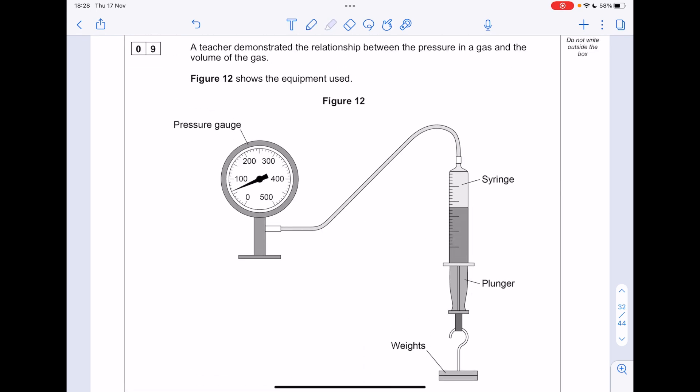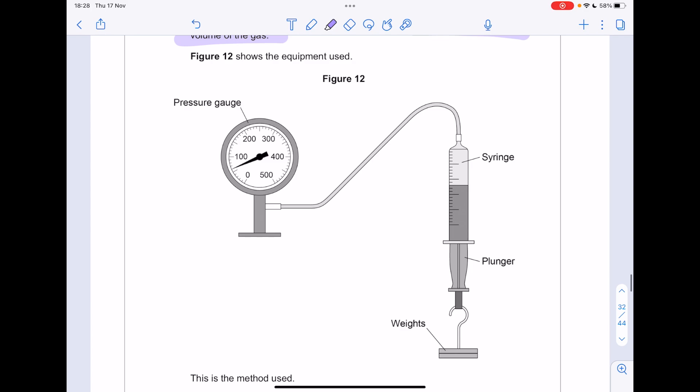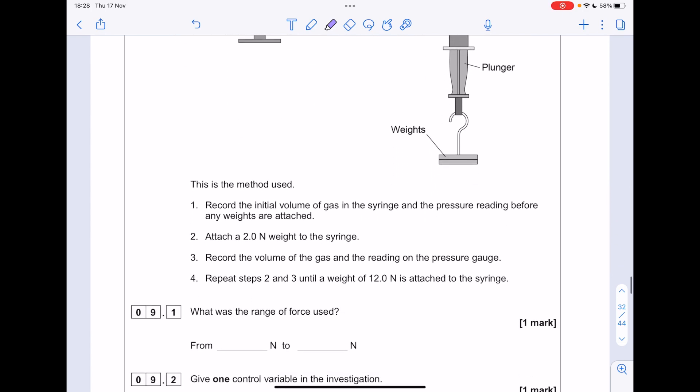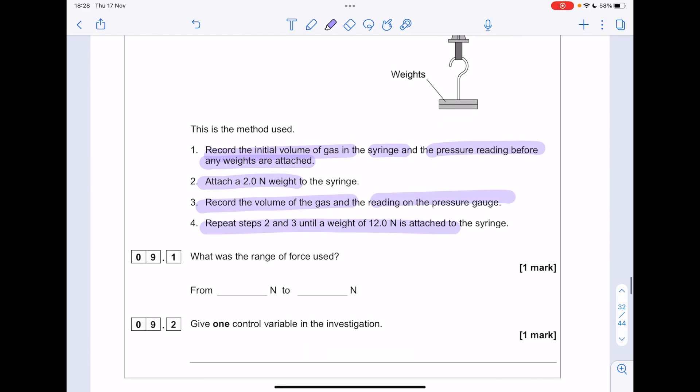A teacher demonstrated the relationship between the pressure in a gas and the volume of the gas. Figure 12 shows the apparatus used. This is the method used. Record the initial volume of gas in the syringe and the pressure reading before any weights are attached. Add a 2N weight. Record the volume of the gas and the reading in the pressure gauge. Repeat steps 2 and 3 until a weight of 12N is attached.